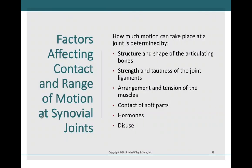Several factors can affect the range of motion allowed by synovial joints. First is the structure and shape of the articulating bones — for example, the ball-and-socket joint of the femur and acetabulum allows a lot of movement, while cartilaginous joints like those between costal cartilage and the sternum allow much less. The strength and tightness of ligaments also plays a role — tighter ligaments mean less movement; more flexible ligaments allow greater range of motion.